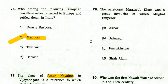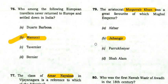The aristocrat Mukarrab Khan was a great favorite of which Mughal Emperor? He was a favorite of Jahangir.